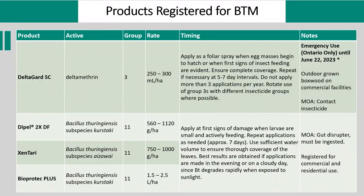Here we have a table of the currently registered products for box tree moth. First, we have DeltaGard, active ingredient deltamethrin, which is a Group 3 contact insecticide. Note this is currently under an emergency use registration, applicable to outdoor grown boxwood at commercial facilities in Ontario. The emergency use does expire in June, but an extension should be in place well before expiry, with the goal of a permanent label expansion. We also have BT products including Dipel, Entari, and Biotech Plus — all Group 11s — available for commercial nurseries. BT is also on the allowable list so it can be used in residential settings. There is also work underway to get BTM on the label of another insecticide called AVID, which is a Group 6, though specific timelines are not yet available.